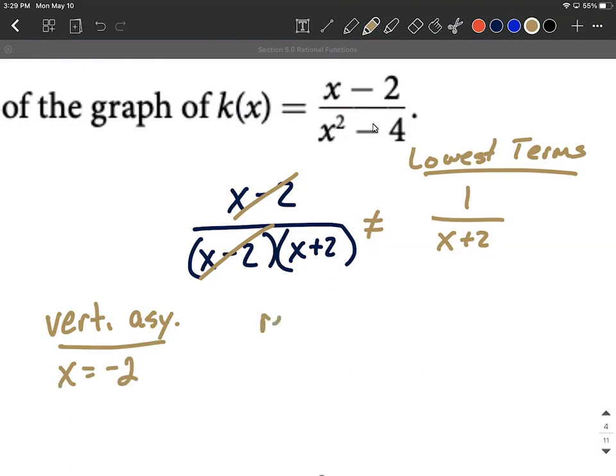Next up, we have a removable discontinuity. All right, we do end up with a removable discontinuity on this one because that comes from whenever you have this common factor between numerator and denominator that you cancel.